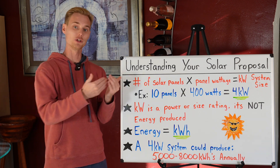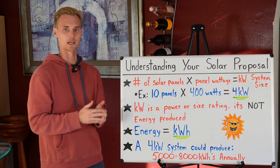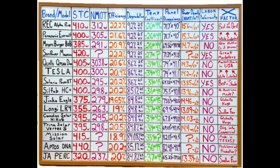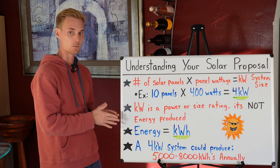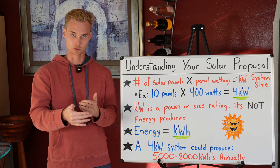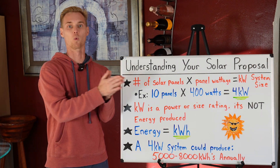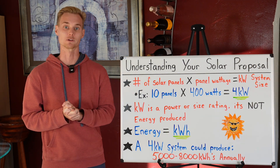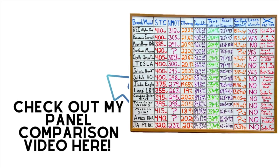Level two with this conversation is the quality of the solar panels, taking into account things like degradation, efficiency, and temperature coefficients of those panels. Because the kilowatt hour number that the proposal is going to show is usually just year one — so check that one out.